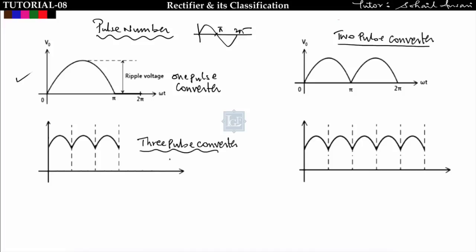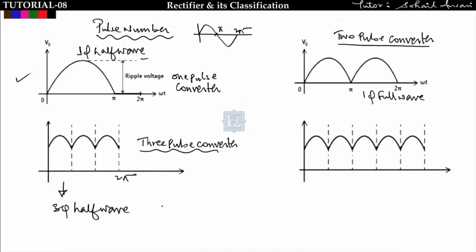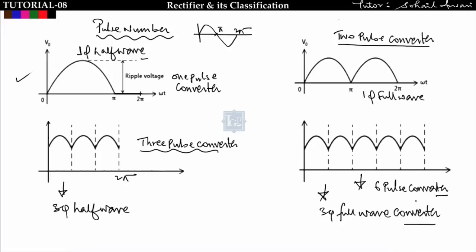There are also three-pulse converters, which give three pulses in one cycle of 2π. This type corresponds to a three-phase half-wave converter. A single-phase full-wave is a two-pulse converter and a single-phase half-wave is a one-pulse converter. There is also a six-pulse converter, whose output waveform is found in a three-phase full-wave converter.